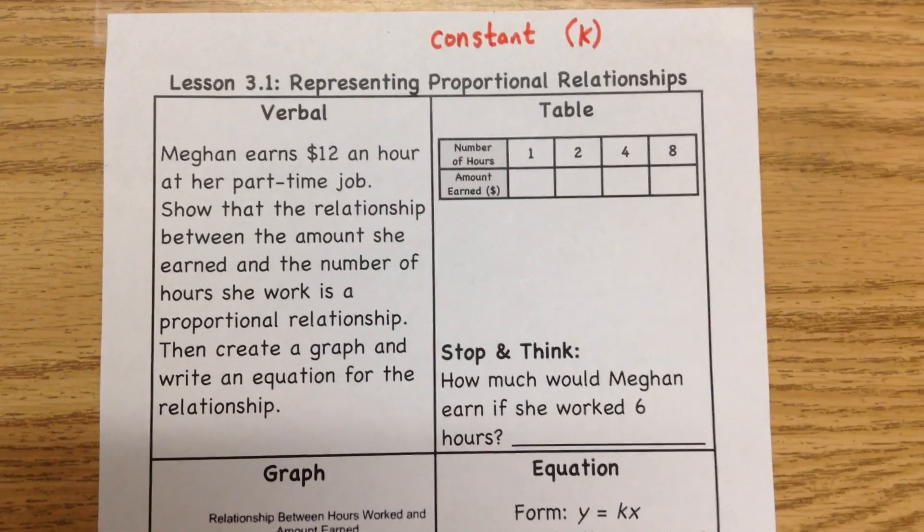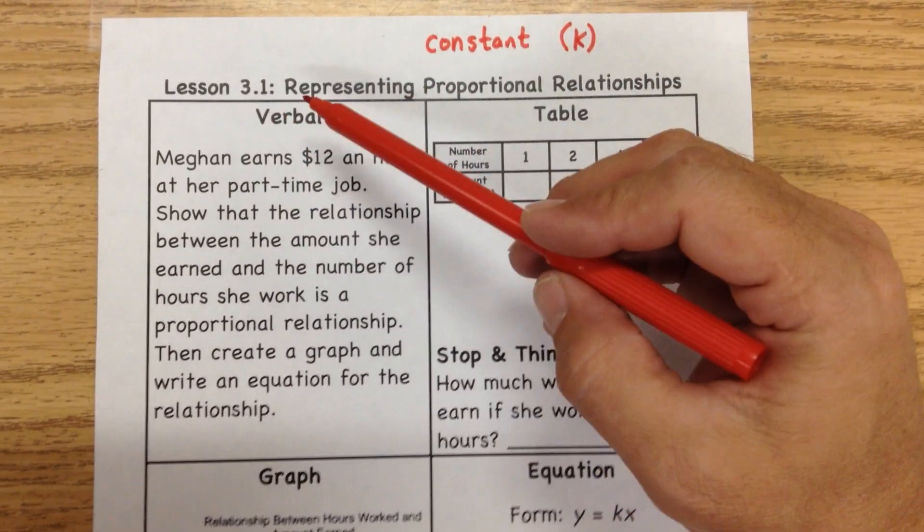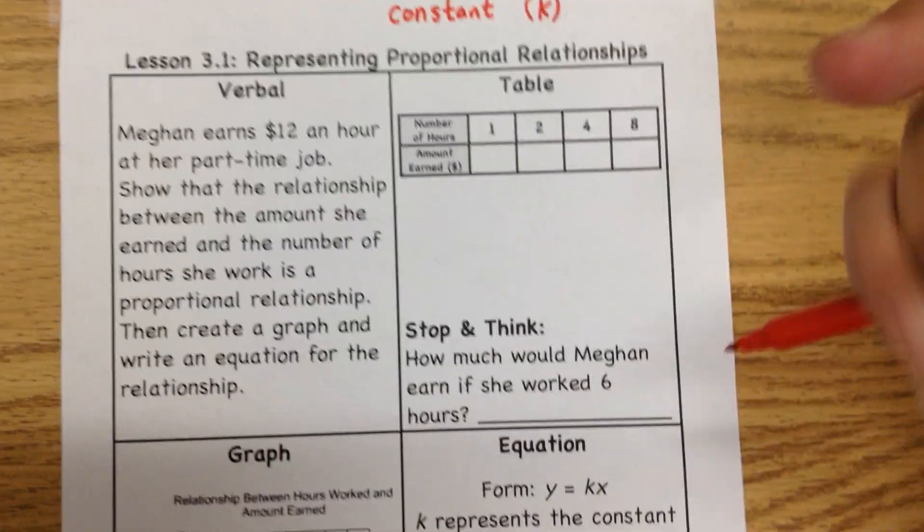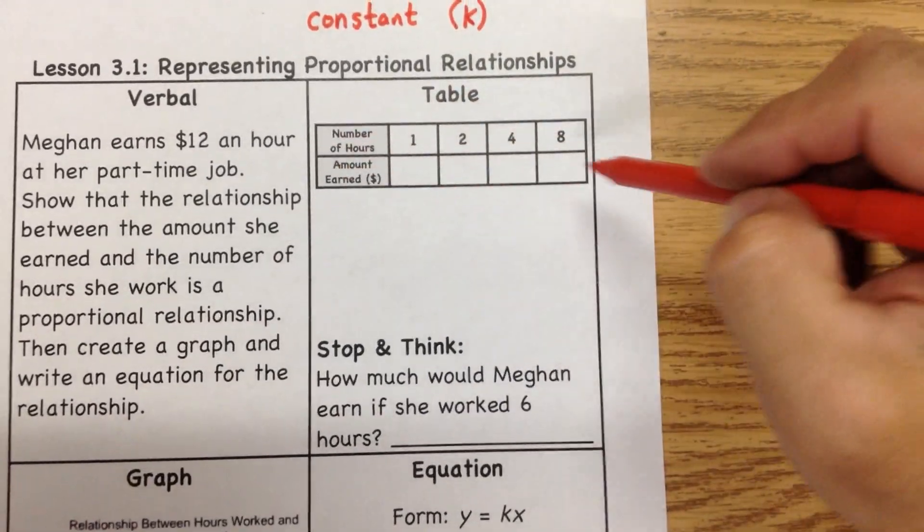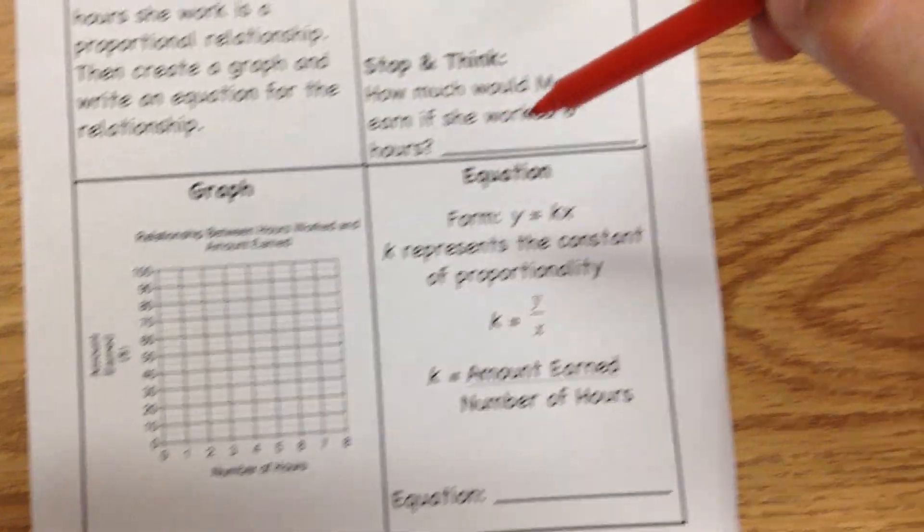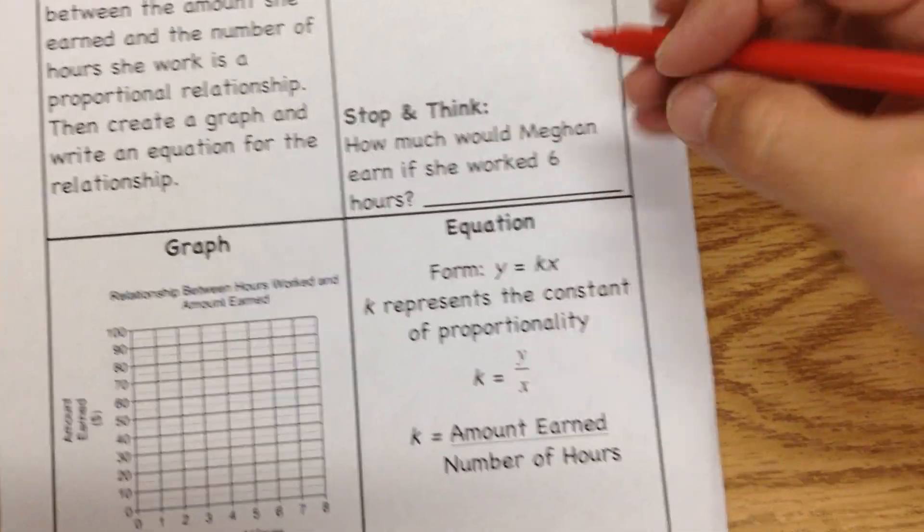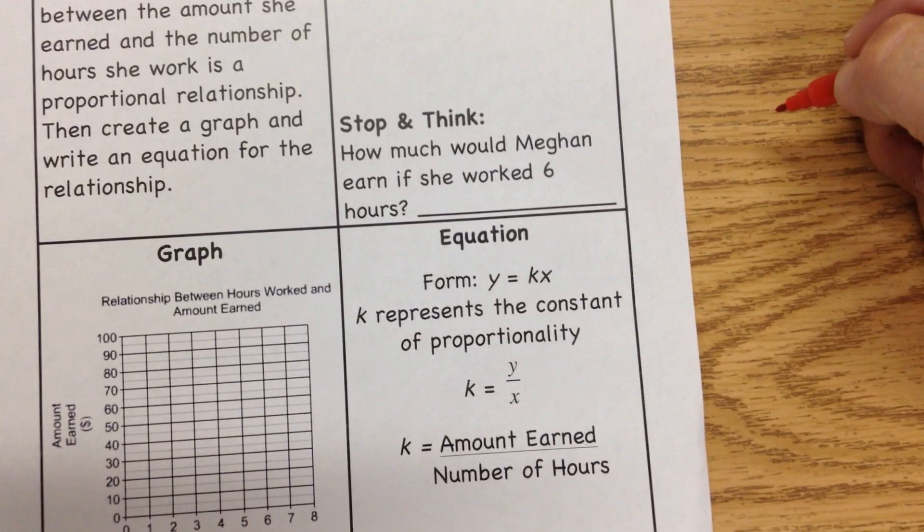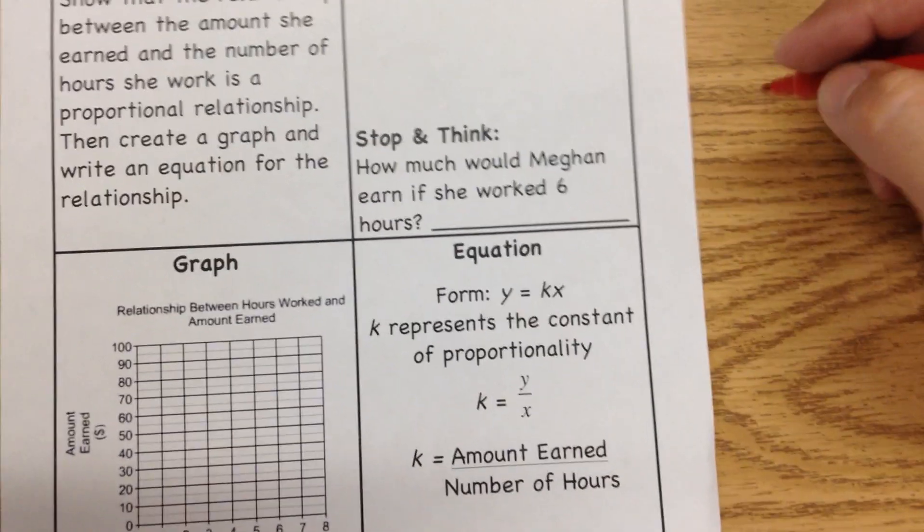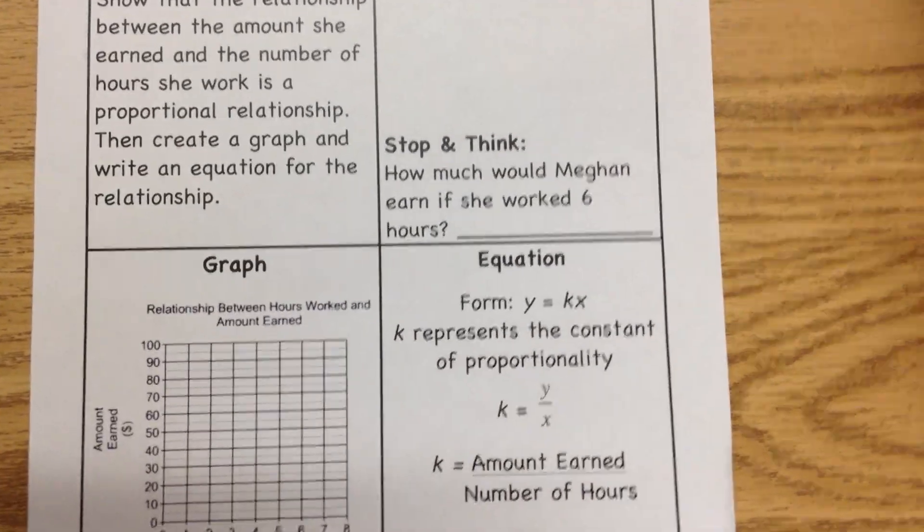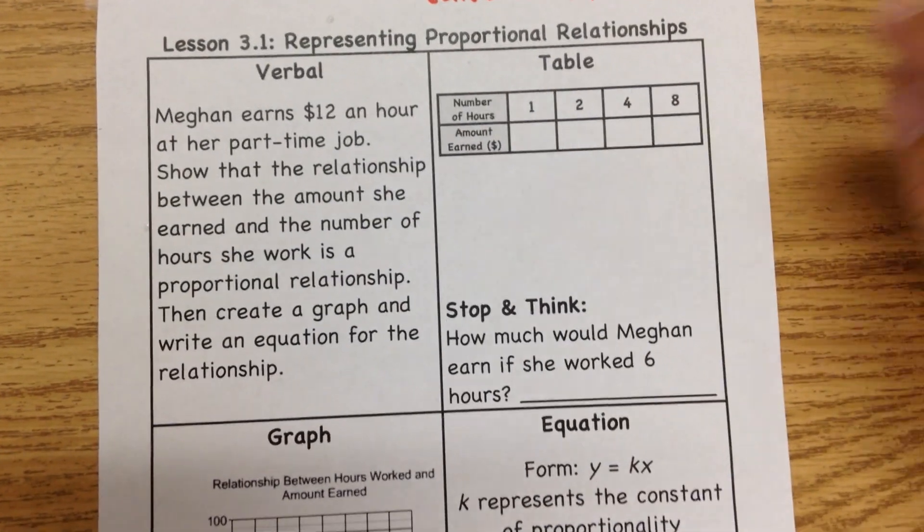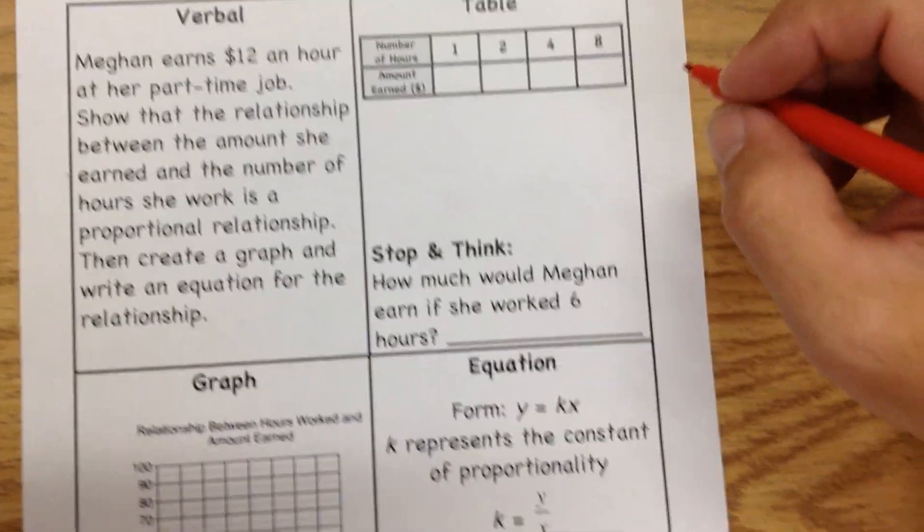But we want to be able to show this in a few different ways. There's four different ways we show this. Verbal, which is the way we just talked about it, it's the words part of it. Then we're going to put it in a table. Then we're going to come down here, which will be the back of your paper, we're going to put it in a graph. And then last, we're going to show what the equation looks like. And if you look here, you see this letter K right there. And that's what we're talking about, that constant value that doesn't change.